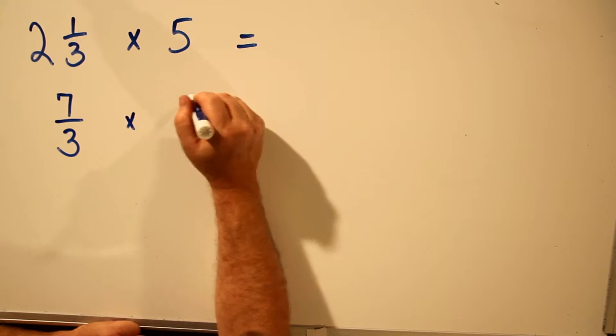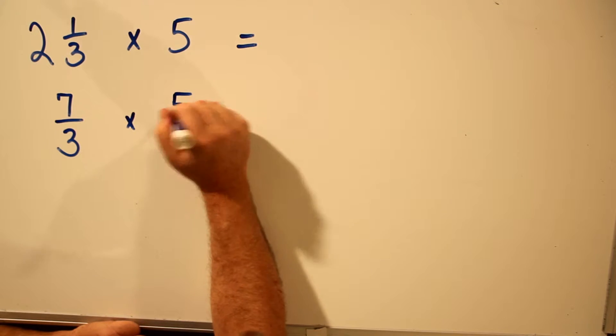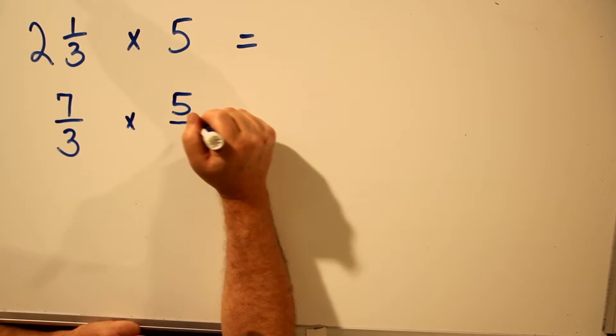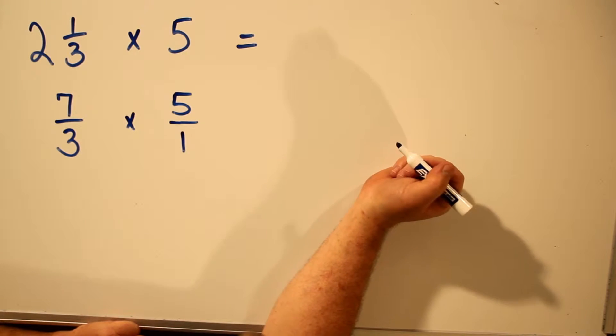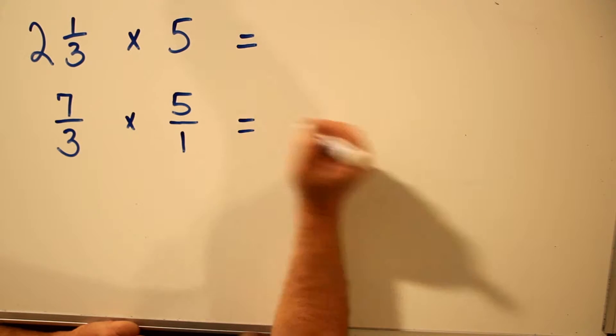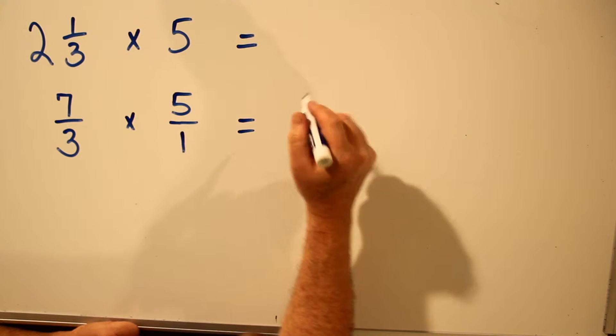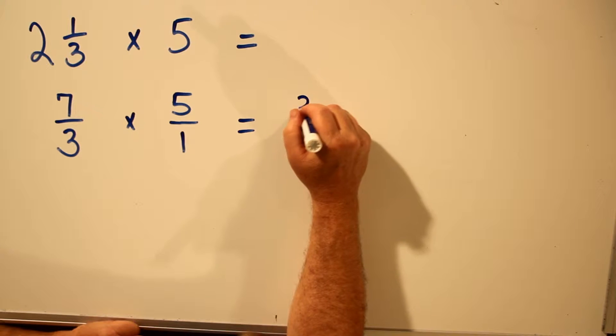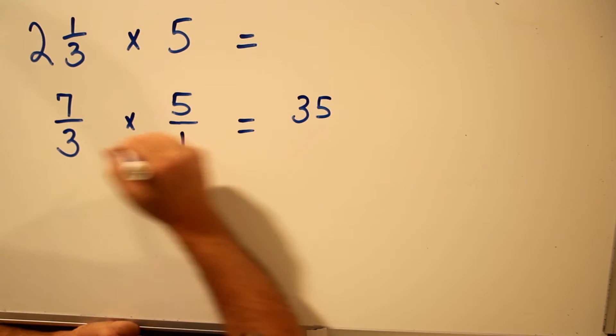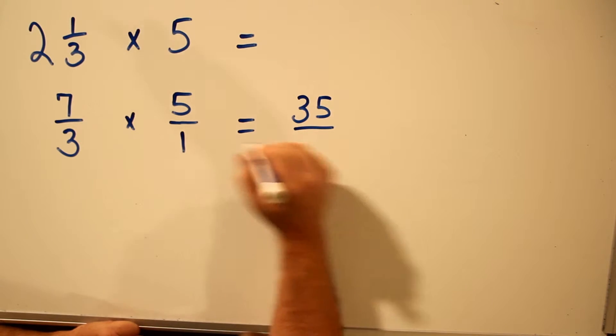Now you can multiply it by 5. And remember, any whole number can be written as a fraction over 1. To multiply these two numbers, you multiply across the top, 7 times 5 is 35, and multiply across the bottom. 3 times 1 is 3.